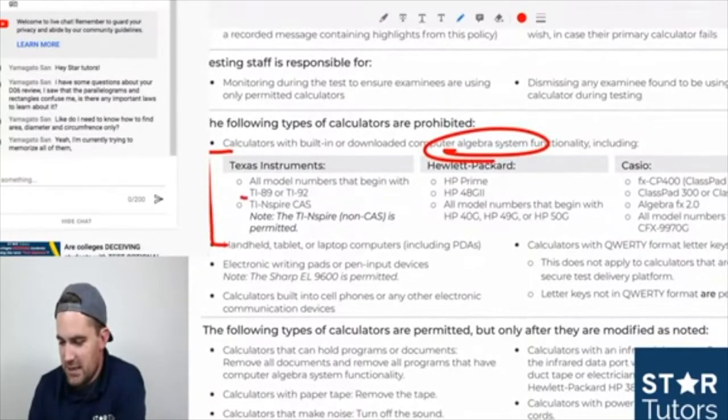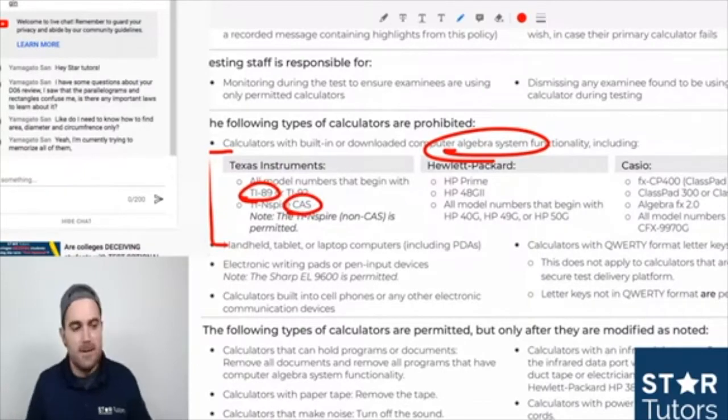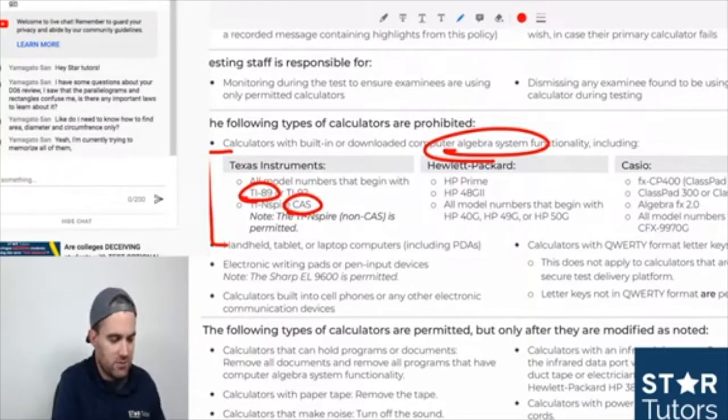Those are the primary ones, particularly the TI-89 and the CAS. CAS has become more popular lately, so I'll post the ACT calculator policy.